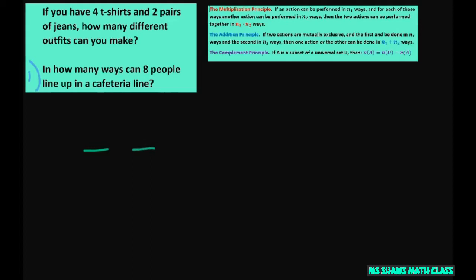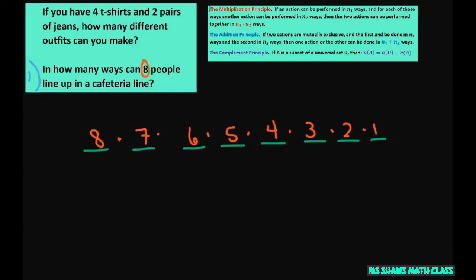Now the next problem: how many ways can eight people line up in a cafeteria? I'm going to put boxes — spaces for each person: first, second, third, fourth, fifth, sixth, seventh, eighth. We have eight people, so you choose one person and you have eight choices, the next is seven, then six, and so on. This is also known as eight factorial.